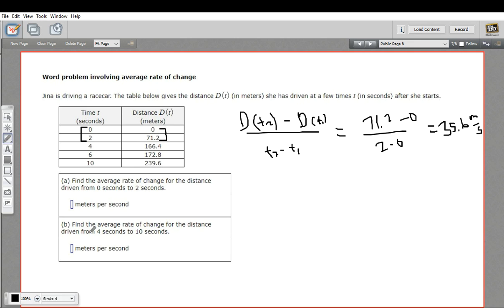Alright, let's find the second problem here. It says find the average rate of change for the distance driven from four to 10 seconds. So here's our t₁ now, and here's our t₂.